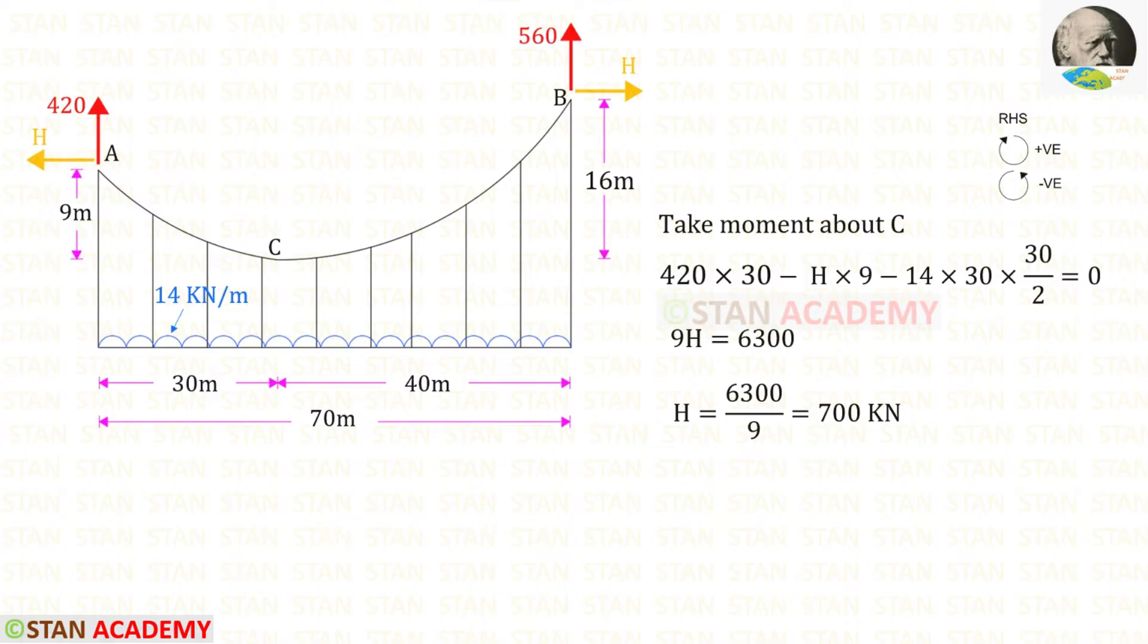Now let us take moment about C from the point A and find the horizontal thrust. In this case we have to follow right hand side rule. Clockwise will be positive and anticlockwise will be negative. Va is acting in the clockwise direction so that it will be positive and the distance is 30. The uniformly distributed load is acting in the anticlockwise direction so that it will be negative.